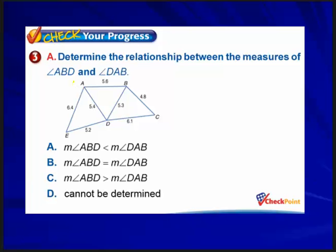Determine the relationship between the measures of angle ABD and angle DAB. Let's look at the opposite sides. The side opposite angle ABD is 5.4, and the side opposite angle DAB is 5.3. Since 5.4 is bigger than 5.3, angle ABD is greater than angle DAB. The answer is C.